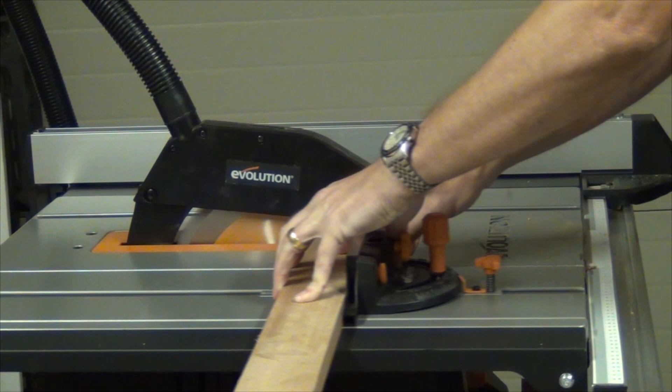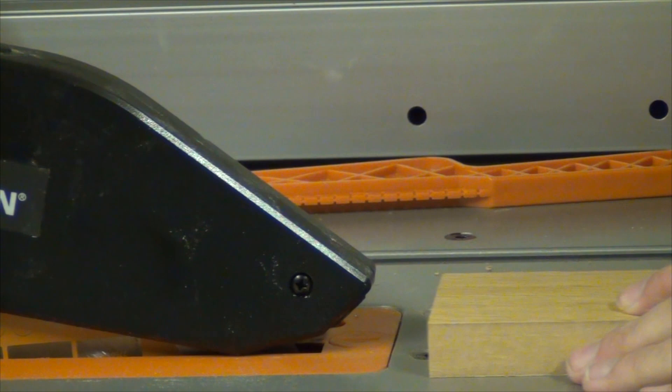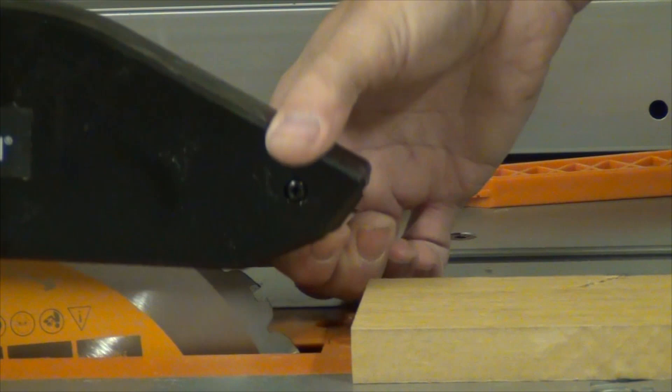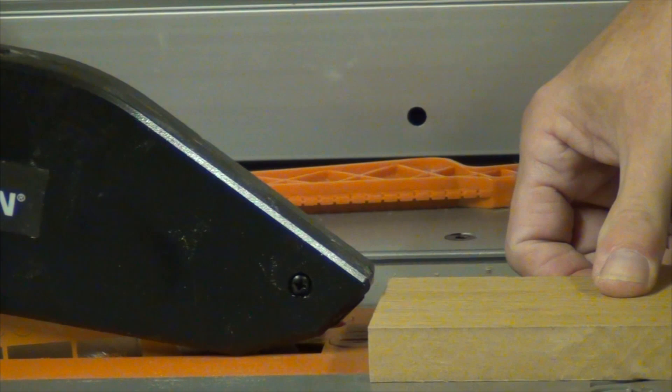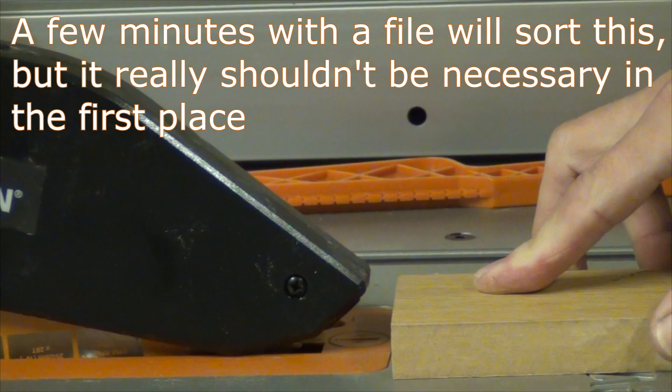So I think it's fairly obvious that the blade guard doesn't easily lift up and having a little look you can see that there's a strange shape on the moulding there. And I think if we lift the blade, no matter how high we lift the blade, it's still not going to allow that piece of work through.